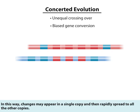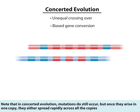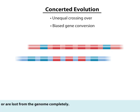In this way, changes may appear in a single copy and then rapidly spread to all the other copies. Note that in concerted evolution, mutations do still occur, but once they arise in one copy, they either spread rapidly across all the copies or are lost from the genome completely.